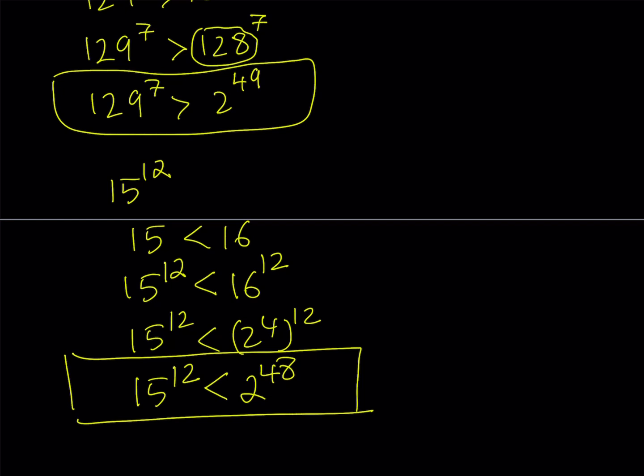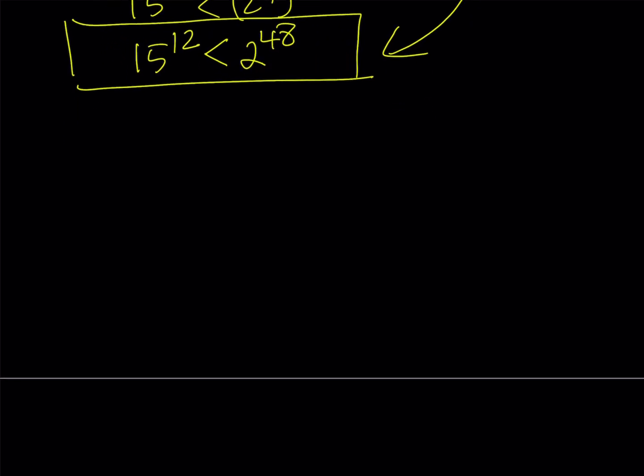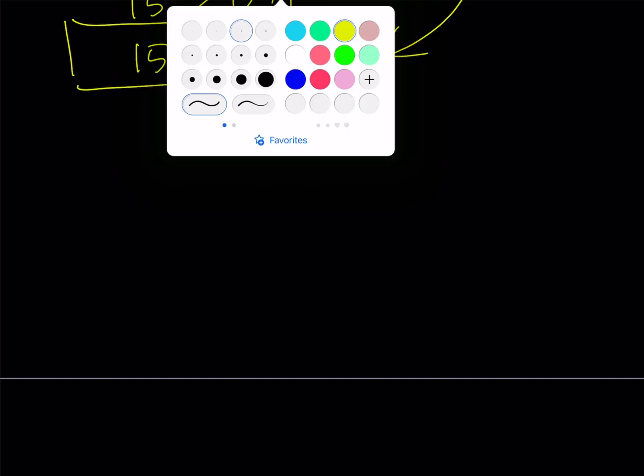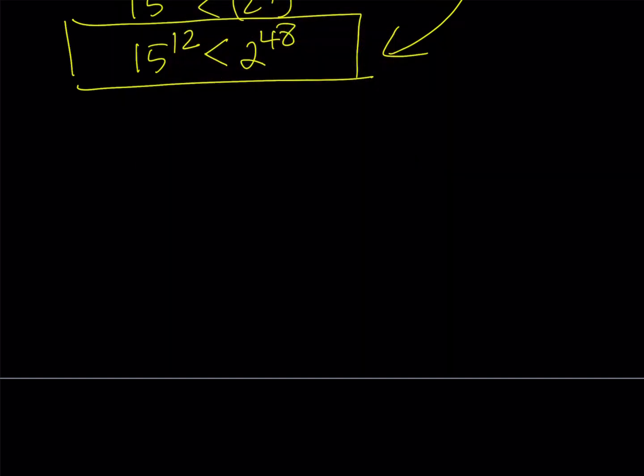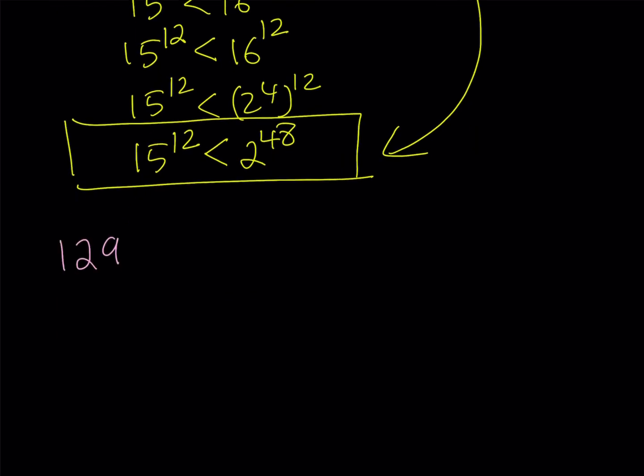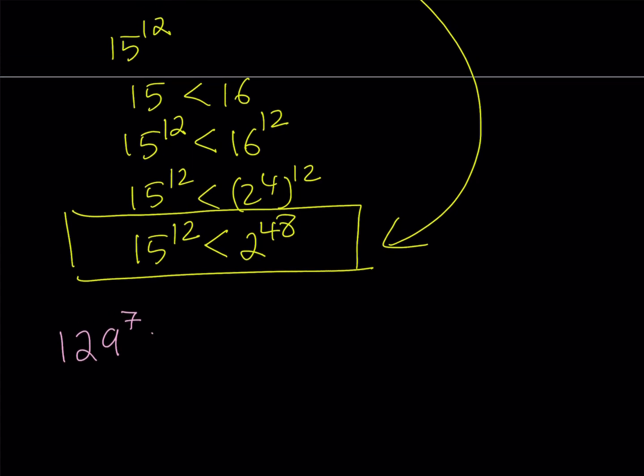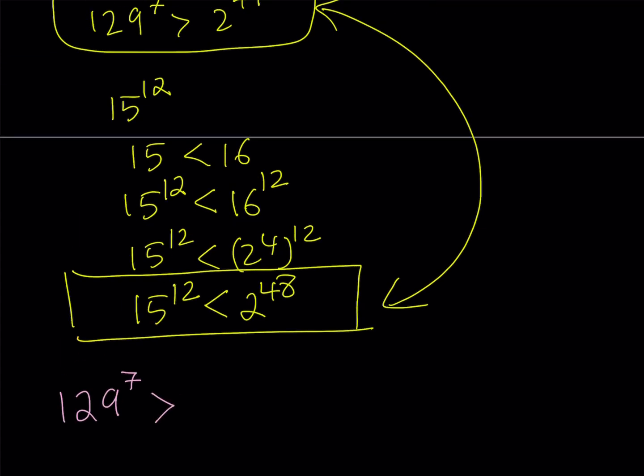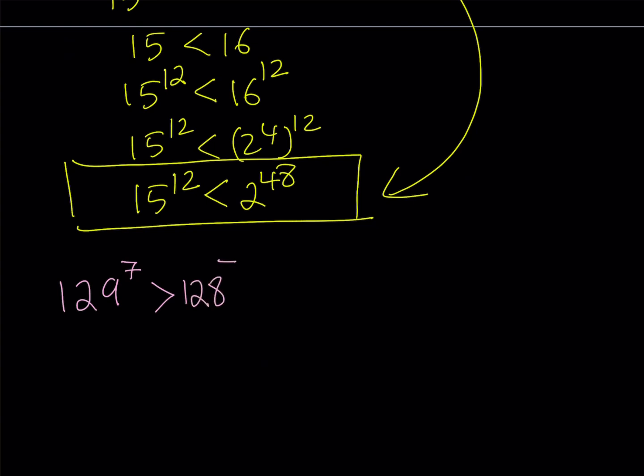Now, how do you put these two together? Well, the very fact that 2 to the power of 49 is greater than 2 to the power of 48 is going to help us here. So we can kind of stitch these together and arrive at the answer. So here's what I'm going to do. I'm going to start off with my original number, 129 to the power of 7. And then I'll say that this is greater than 128 to the 7th power, which is equal to 2 to the power of 49.